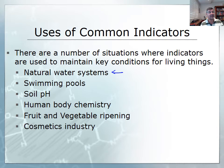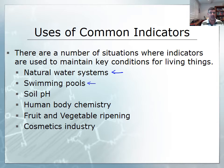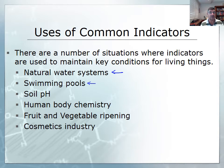As well as natural water systems, we also have some synthetic or man-made ones, which include our swimming pools. They are environments where it's very important that we monitor pH and make sure that the solution is not too acidic and not too basic. Different types of plants also have preferences for the types of soils that they grow in, and one of the conditions of those soils can be its pH.